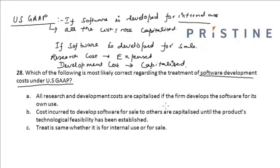Looking at the options: option A says research and development costs are capitalized when the firm develops the software for its own use — that is, for internal use — hence this option is correct. The second option says that costs incurred to develop software for sale to others are capitalized until the product's technological feasibility has been established.